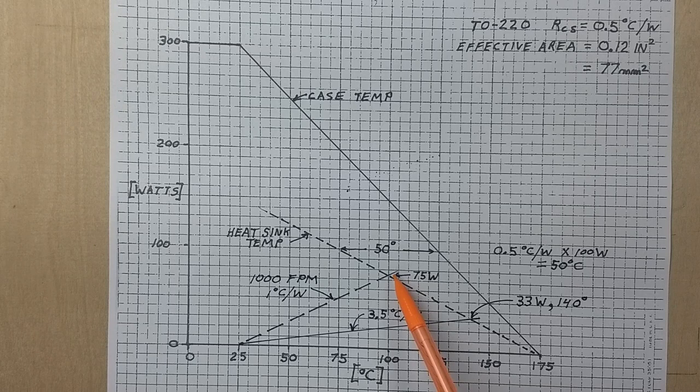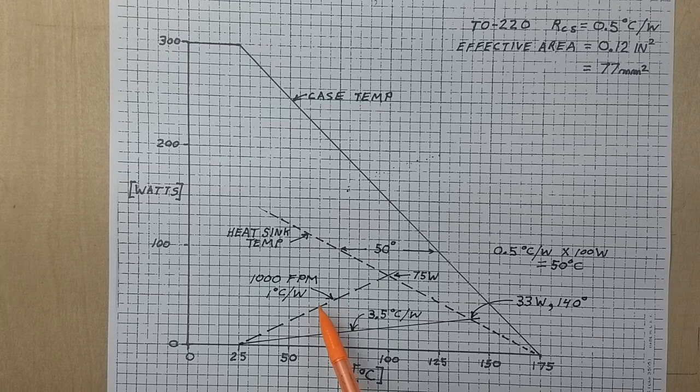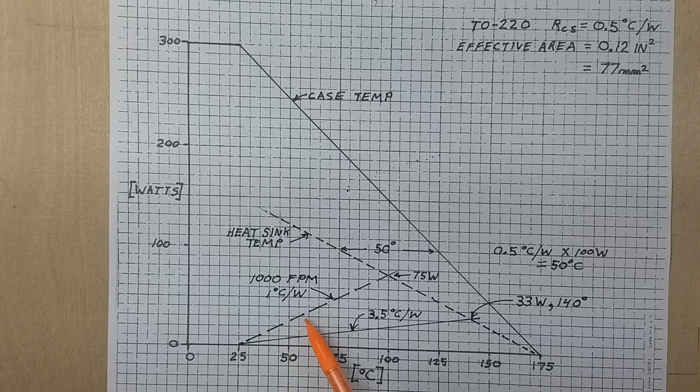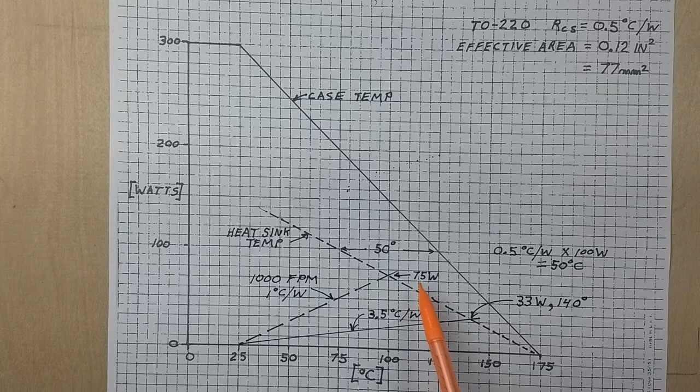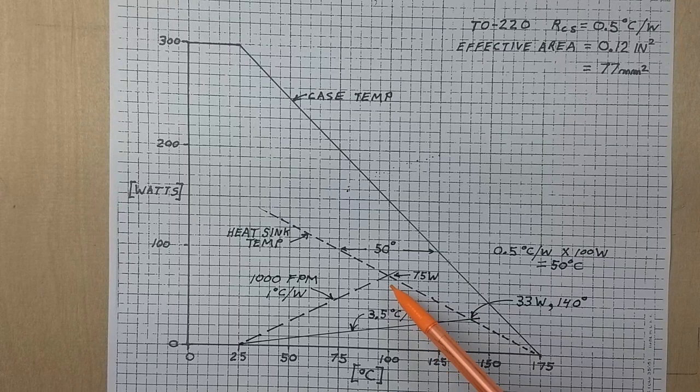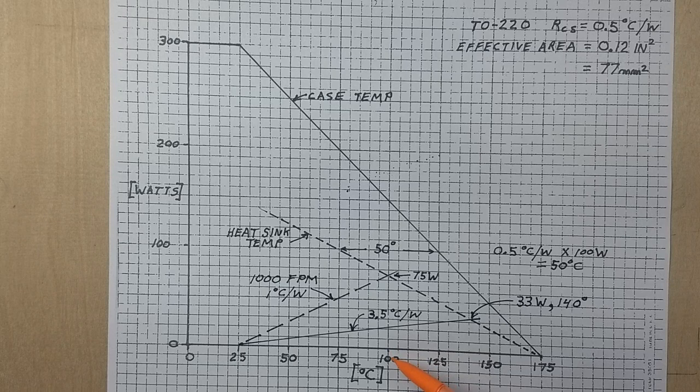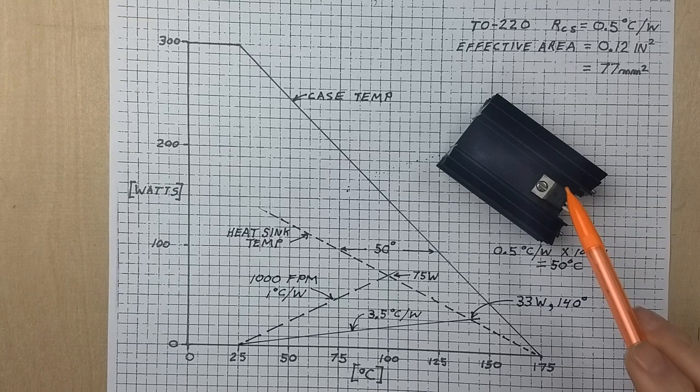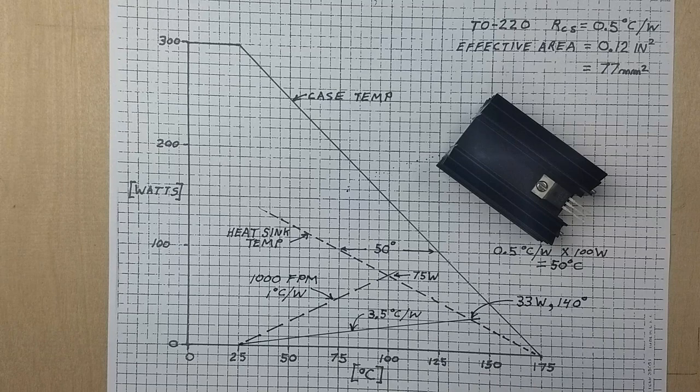And the heat sink that I just showed you at 1,000 feet per minute air movement is good for 1 degree C per watt. So at the intersection here, we can dissipate 75 watts with a heat sink temperature of 100 degrees C. Now this heat sink is only rated at 3.5 degrees C per watt with normal convection.